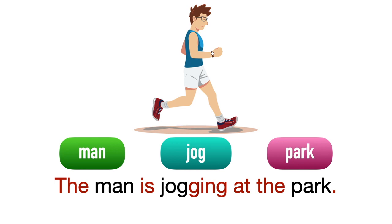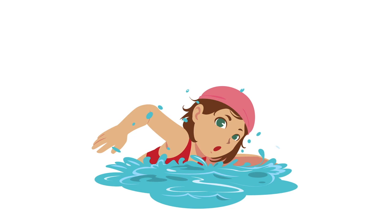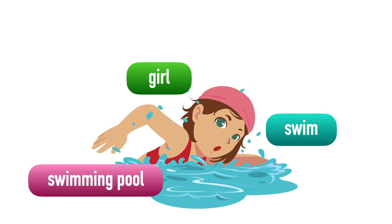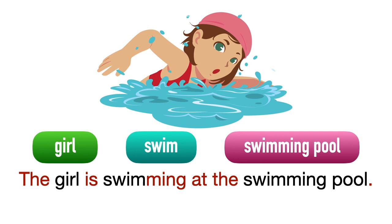The people is a girl, the action is swim, the place is swimming pool. The girl is swimming at the swimming pool. Kita tidak boleh mengatakan dia merenangkan dirinya — tidak boleh. Tiada objek di situ.